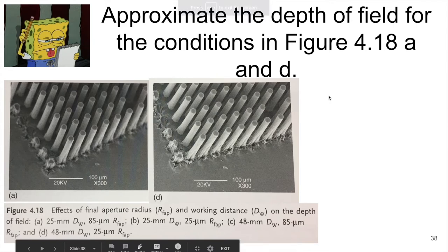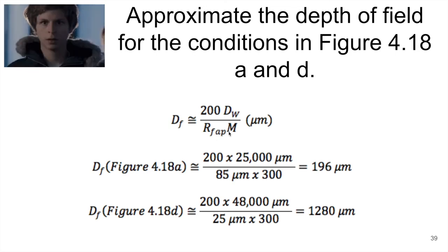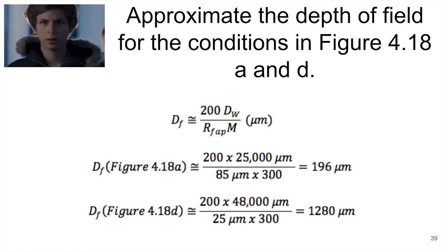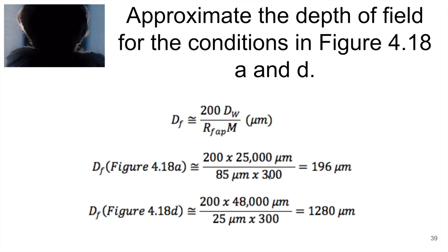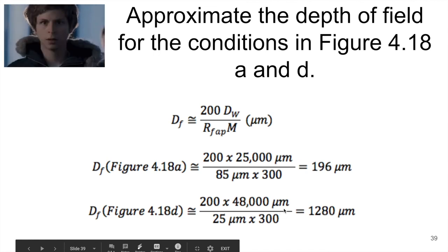All right, so hopefully you've had a chance to approximate these depths of field. And so let me show you the calculations I have. So this is our depth of field equation incorporating the radius of the aperture, magnification and the working distance. The magnification was set for both those images at 300 and then the working distance and the radius were defined in the caption. So if we plug in those values for A and D, we see that for A, we have a depth of field of approximately 200 microns. And then it jumps up to 1280 microns or basically a millimeter for D.